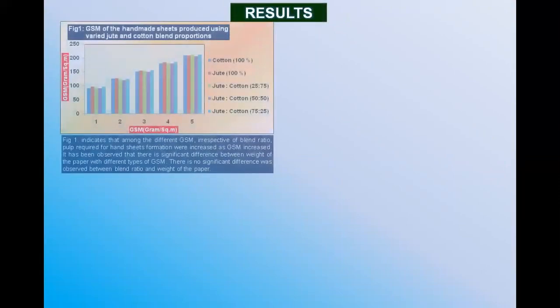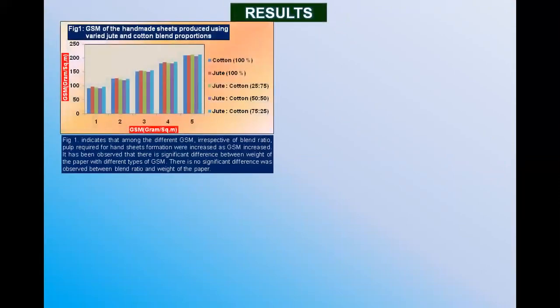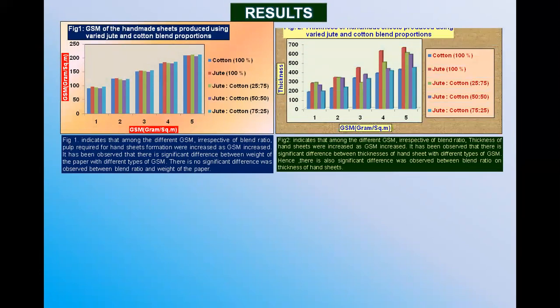Now coming to the results. Figure 1 shows the GSM of hand sheets produced using varied jute and cotton blend proportions. It is observed that there is a significant difference between the weight of the paper with different types of GSM. No significant difference was observed between blend ratio and weight of the paper.